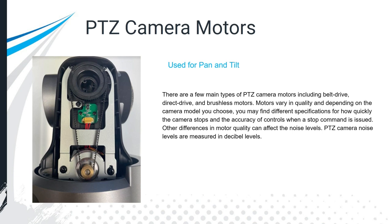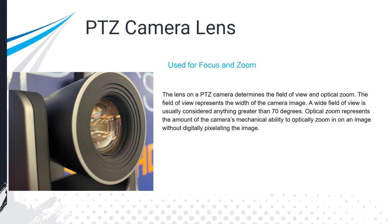The PTZ camera motor is an important part of the camera — it's what moves the pan and tilt. Motors do vary in quality, and the motor can affect the noise of the camera, the physical noise you can hear measured in decibel levels. It can also affect how quickly the camera can pan, tilt, and zoom. Higher quality motors are more accurate when recalling PTZ presets and can move more quickly when needed.